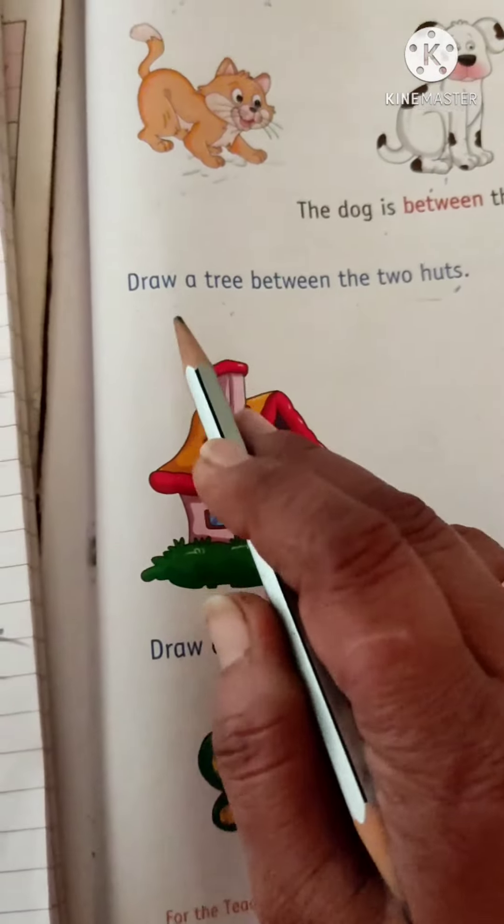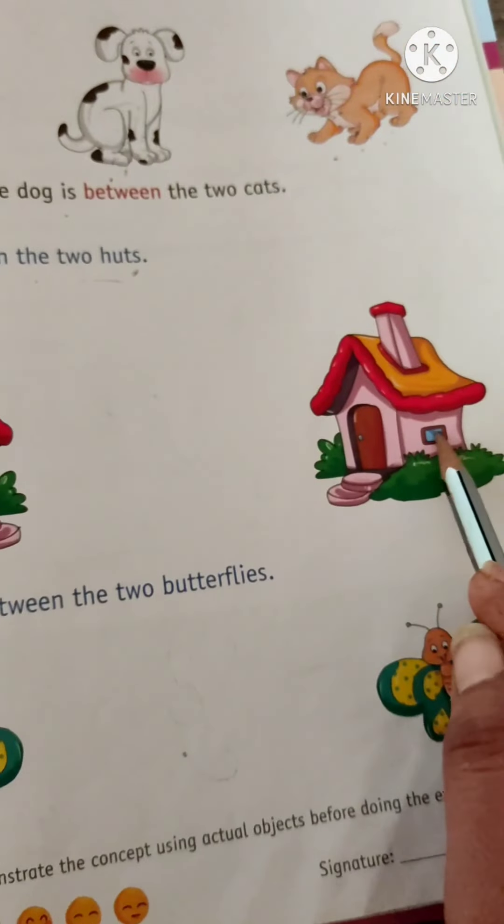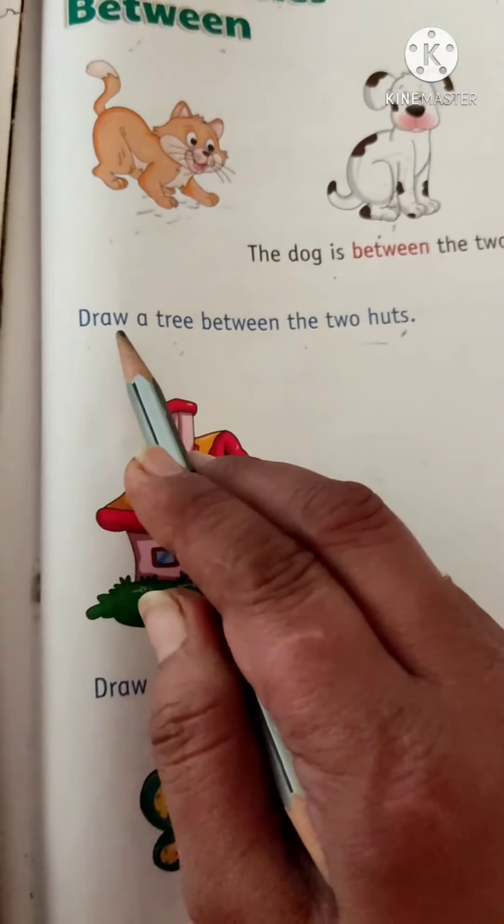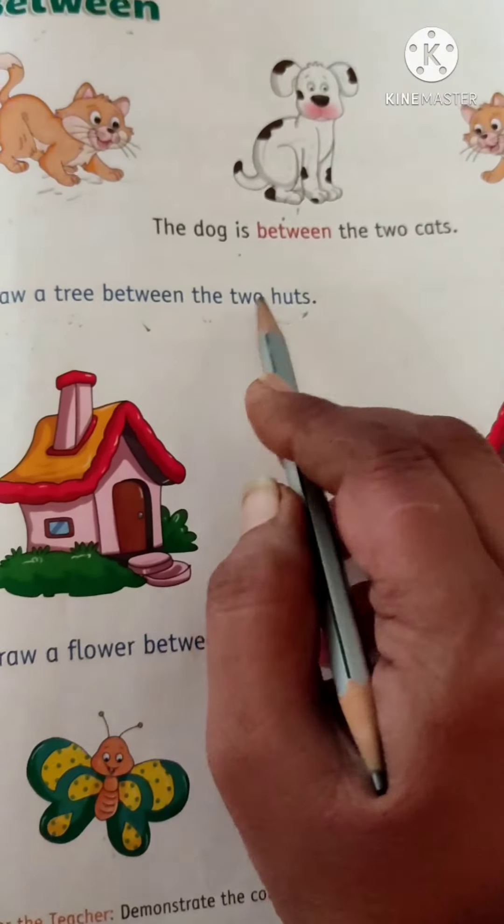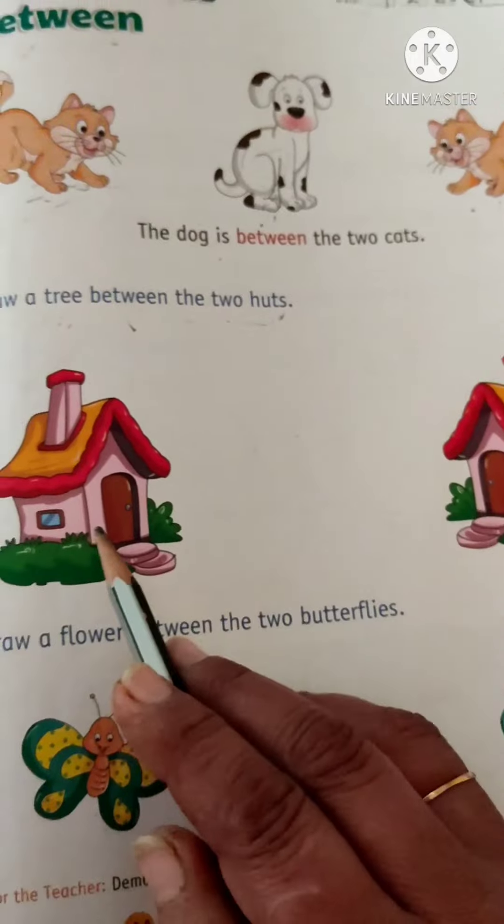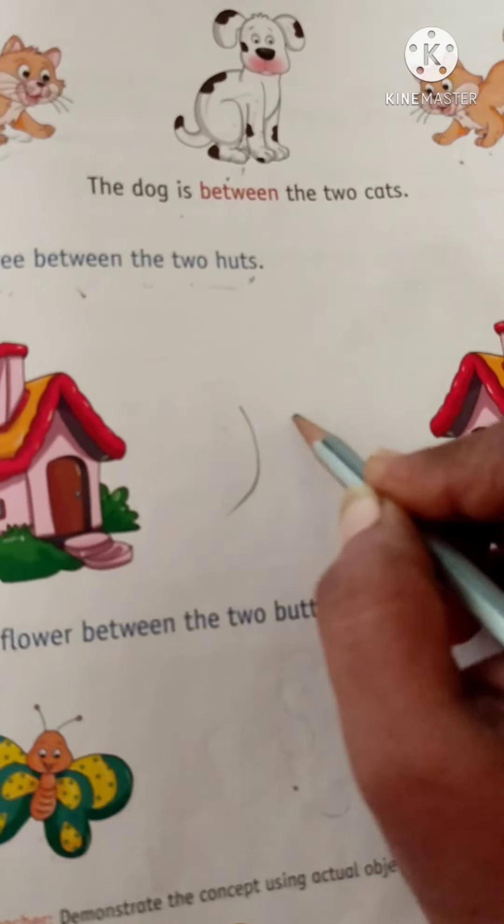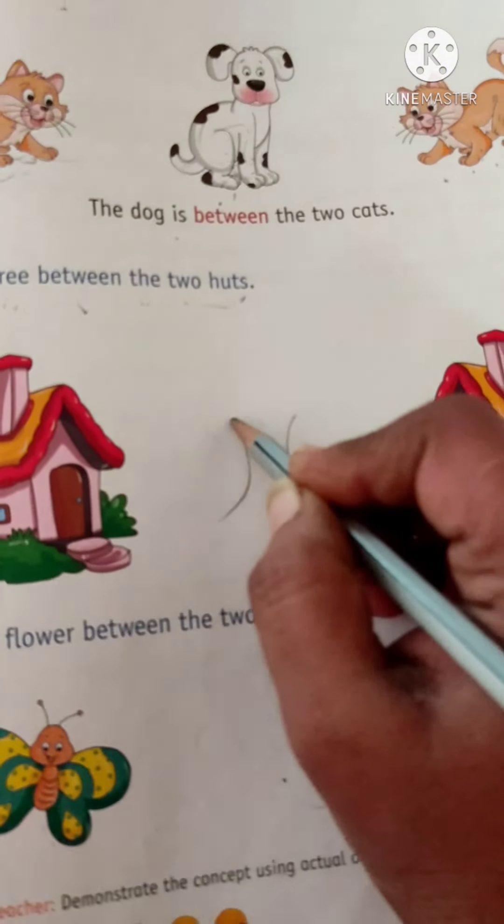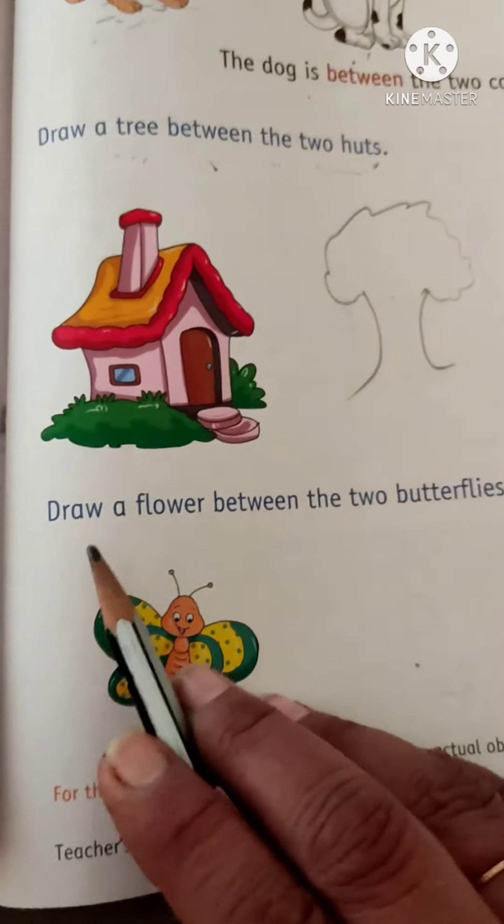In the next picture, see, there is two huts. One and two. And see this instruction: draw a tree between the two huts. This is two huts, and we have to draw a tree between the two huts. See, like this.